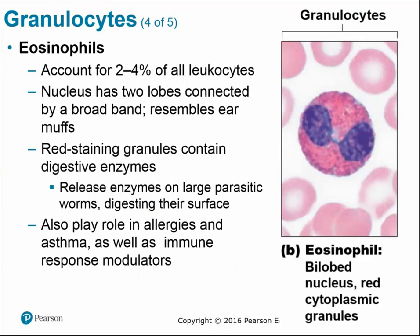Eosinophils account for 2–4% of all leukocytes. They have a bi-lobed nucleus and red-staining granules containing digestive enzymes that work on large parasitic worms, digesting them from the surface — since parasitic worms are larger organisms, we attack them from the outside in. Basophils are the most rare leukocytes. Their dark purple granules contain histamine, an inflammatory chemical that acts as a vasodilator and attracts white blood cells to injured areas. This is why antihistamines are taken for allergy-related sinus inflammation.